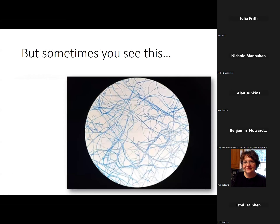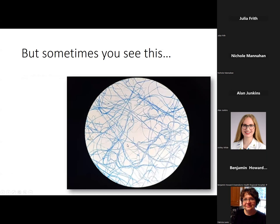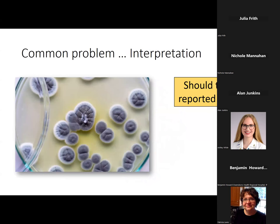One problem we encounter is sterile hyphae — just filaments with no reproductive structures and no spores — where we can't get the organism to reproduce or produce any identifying structures. At that point there's really nothing we can do except note it's a mold and let it go, though there are some options I'll mention later.